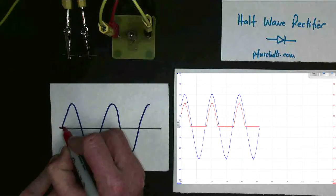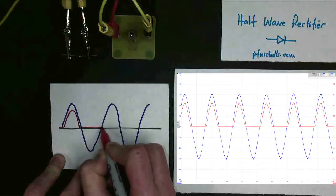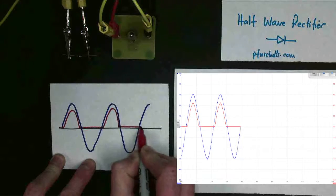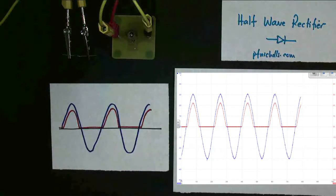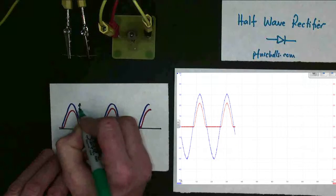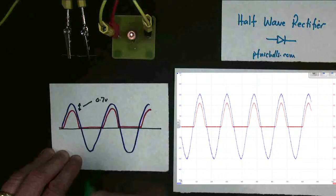The diode conducts in this direction, and it doesn't conduct in this direction. Something else you'll notice is that the blue line is now bigger than the red line, and that's because there's a difference in voltage here. This difference in voltage is 0.7 volts, the voltage required for a diode.